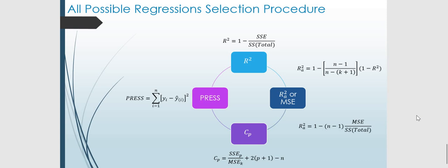This is called the all possible regression selection procedure. The four most common methods used as a basis for selecting the model are: the first one is R-squared; the second is the adjusted R-squared, or the MSE method; the third is the Cp criterion; and the fourth is the PRESS criterion. For this session we will focus on reviewing the concept of R-squared and adjusted R-squared.